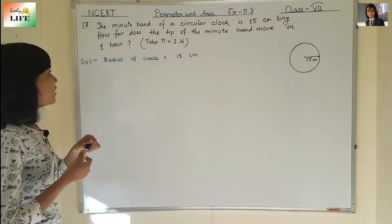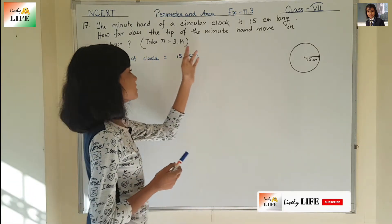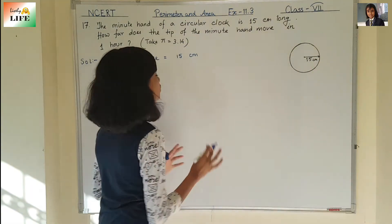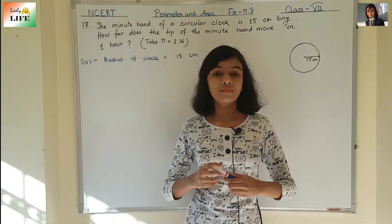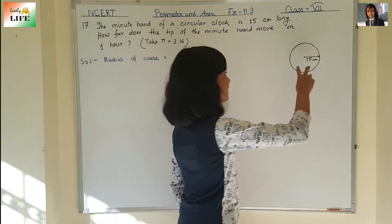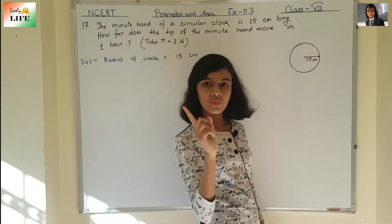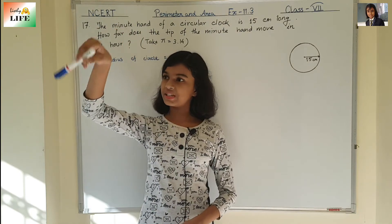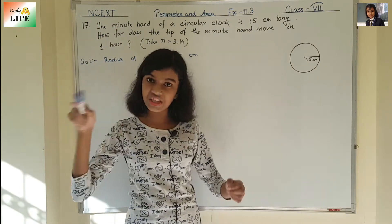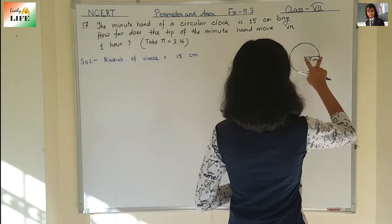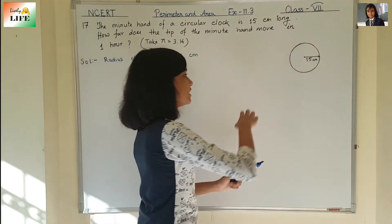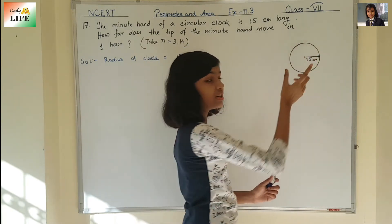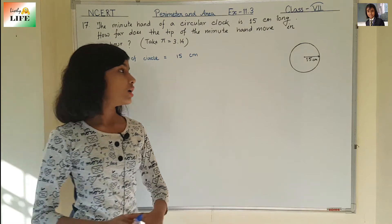We need to find out how far the tip of the minute hand moves in one hour. The tip of the minute hand takes a complete round in one hour. If one hour passes, the tip of the minute hand takes a complete round of the clock and comes back to its original position — that is one hour.